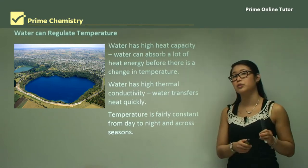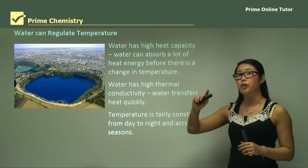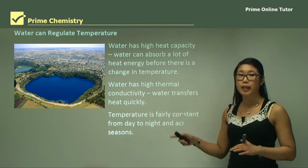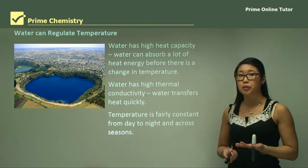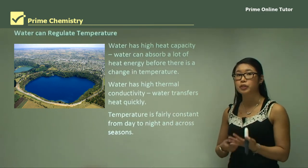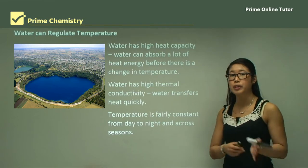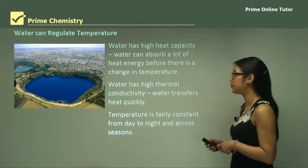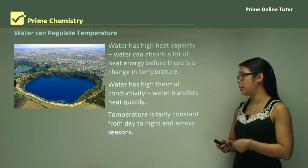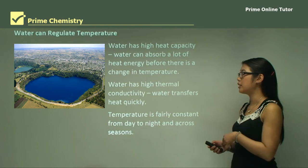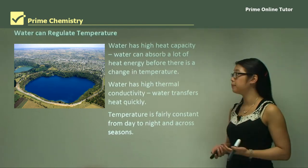So if I have a heat source in one spot, on the other side of a lake it will quickly become warm because heat transfers from one spot to the next. This means temperature is fairly constant from day to night and across seasons because water can do this.